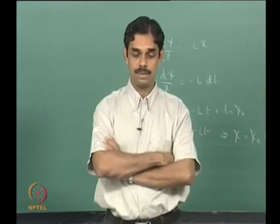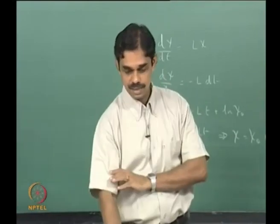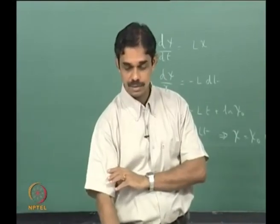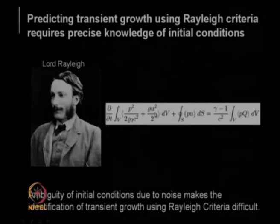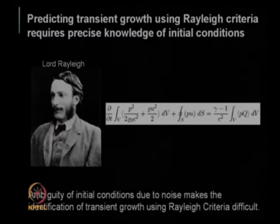There is one more problem. You see these angle brackets — normally we try to average over a cycle to find out whether the energy in this cycle is less or more than the energy in the next cycle. But when you are in a transient regime everything is changing, so we cannot really identify and pinpoint a period, because there are many periods available.